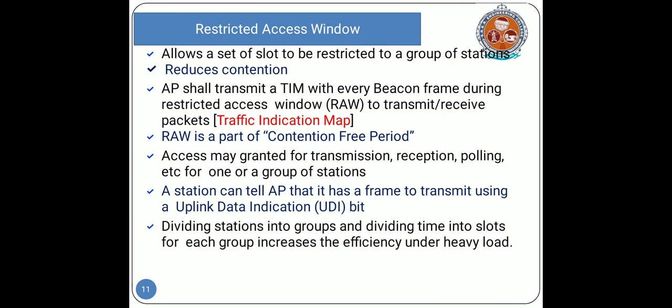The Restricted Access Window transmits a TIM (Traffic Indication Map) with every beacon frame, allowing stations to transmit and receive packets without contention. Access may be granted for transmission, reception, and polling for one or a group of stations. A station can indicate to the access point that it has a frame to transmit using the uplink data indication bit. Dividing stations into groups and dividing time into slots for each group increases efficiency, especially under heavy network load.